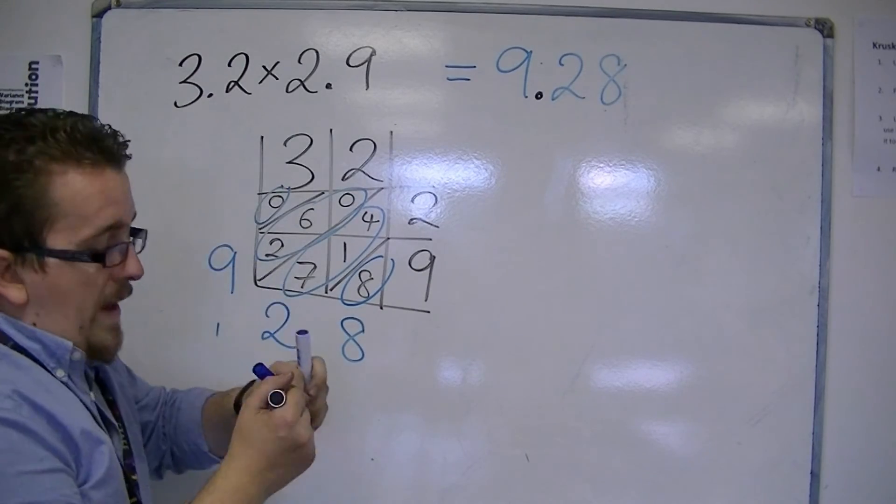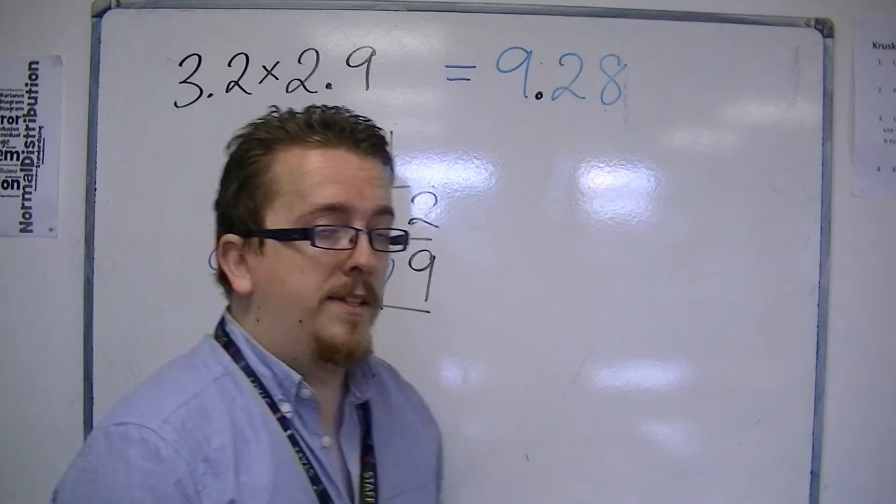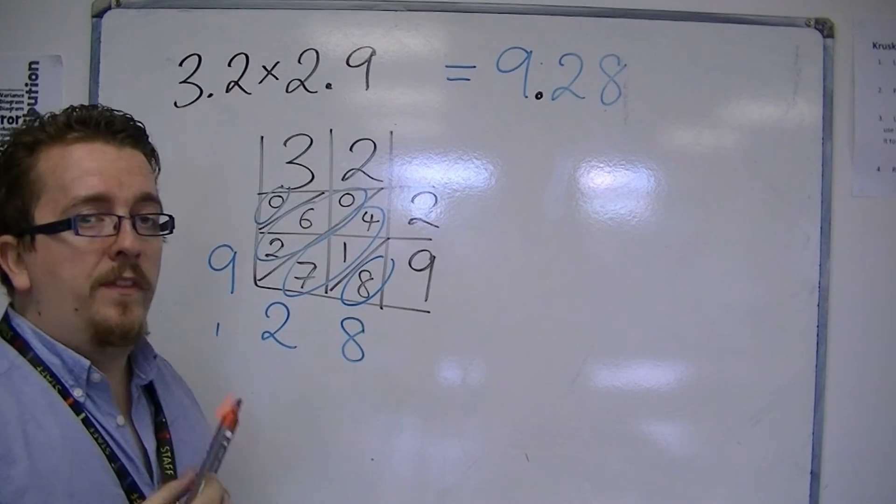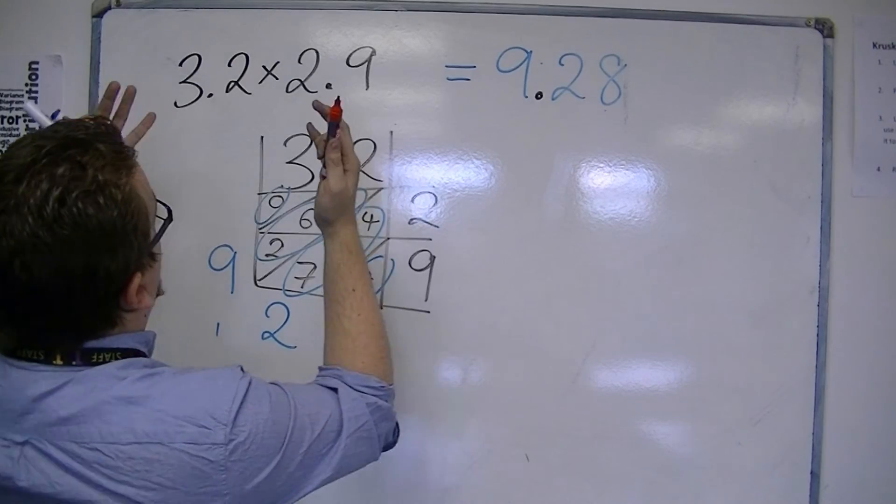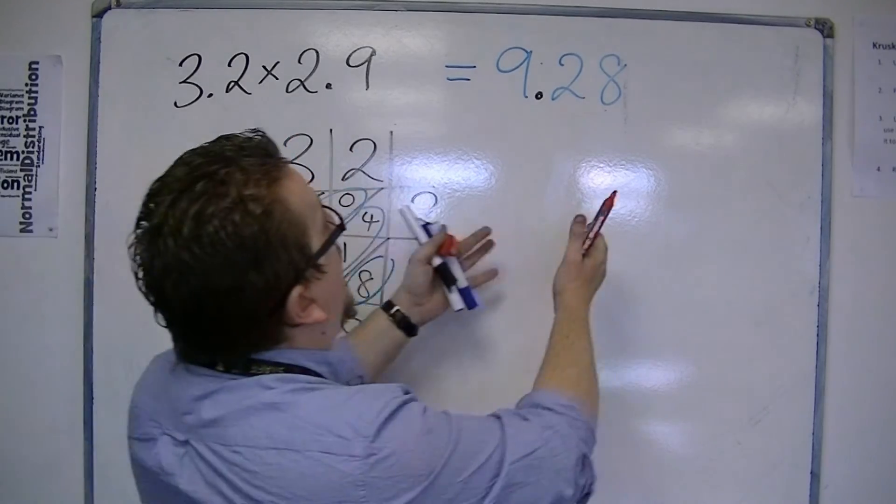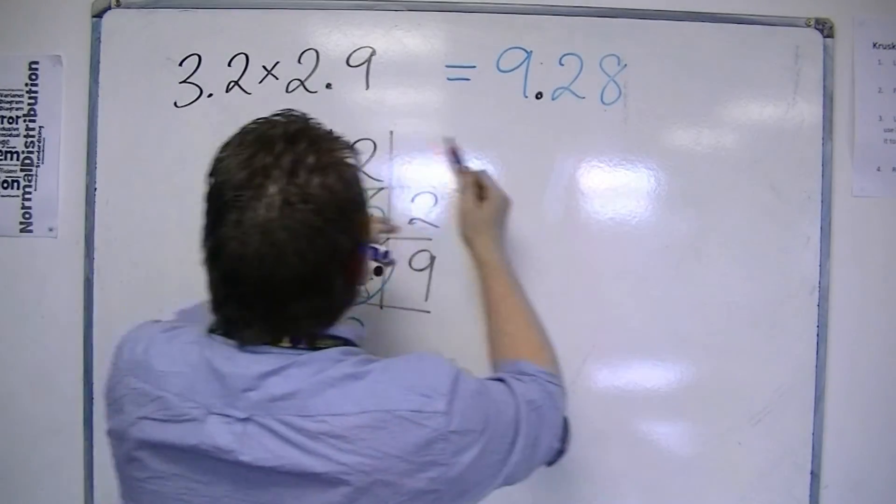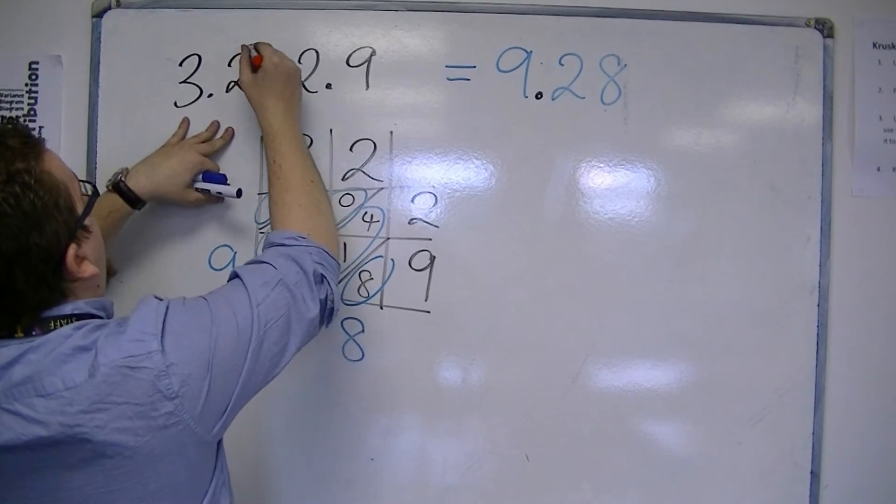Another way of making sure that you get it right is by counting the number of decimal places you have in the question. And it should be the number of decimal places you have in your answer.